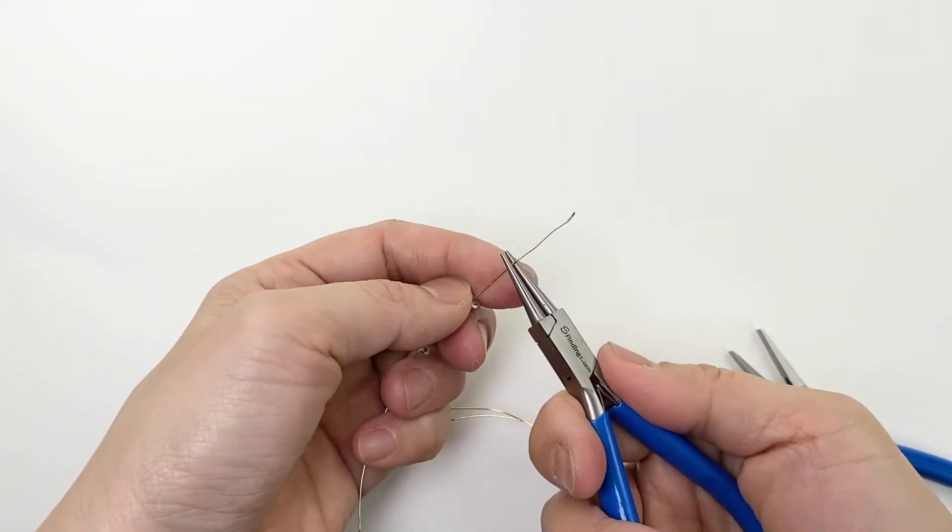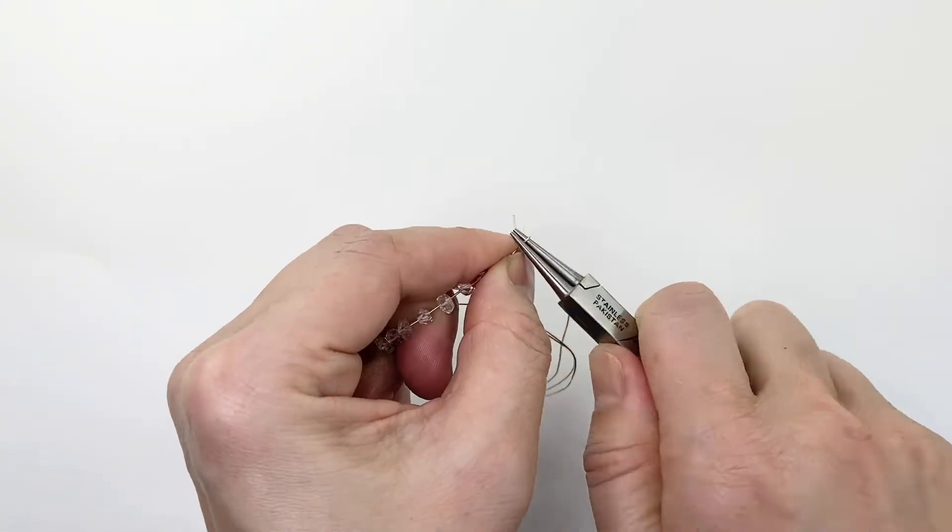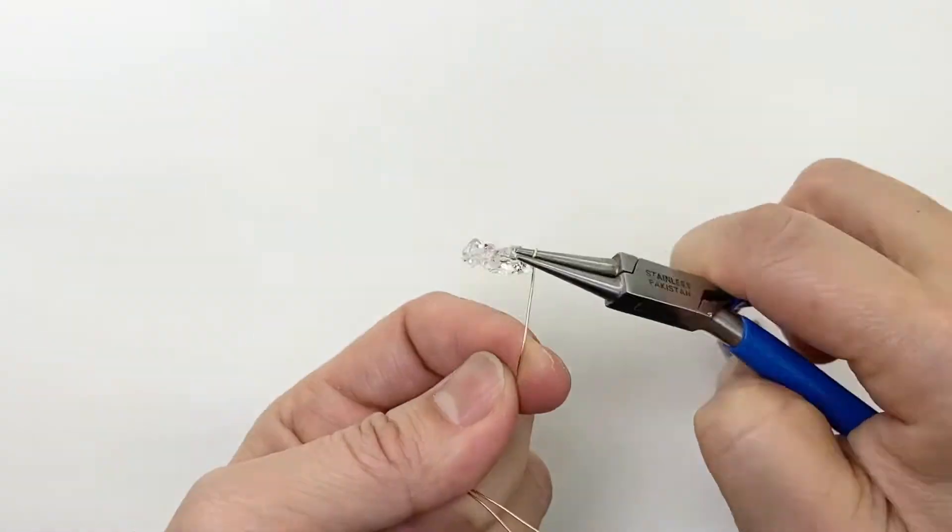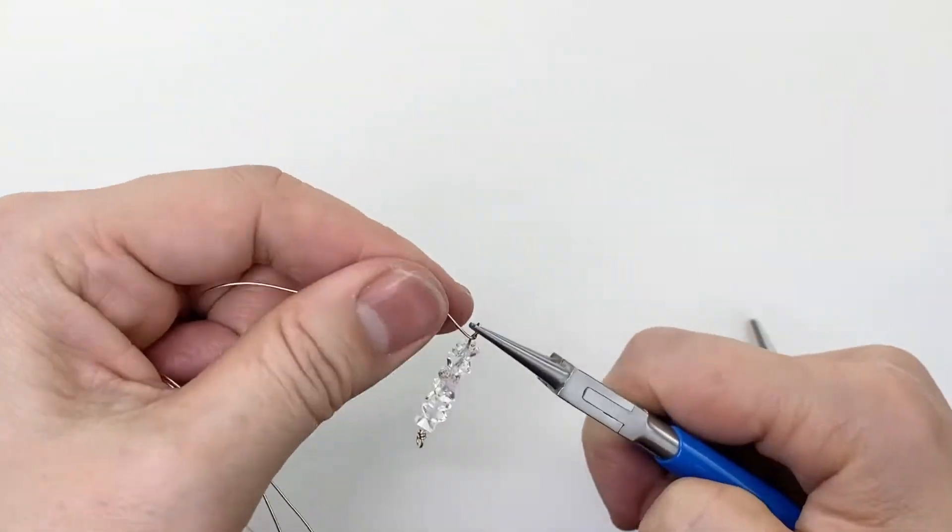To make a stone ID bracelet, I thread all of the beads with a wire. Using round nose pliers, I make a loop on one side, making sure that the neck is long.